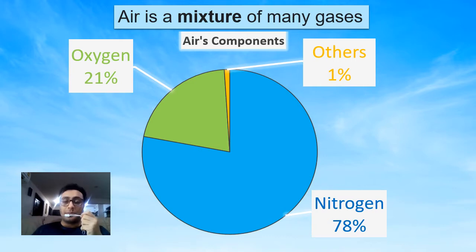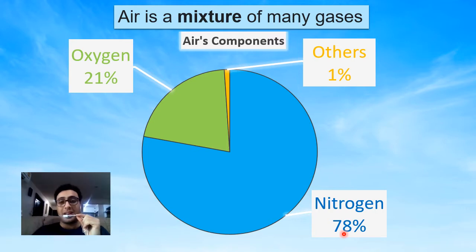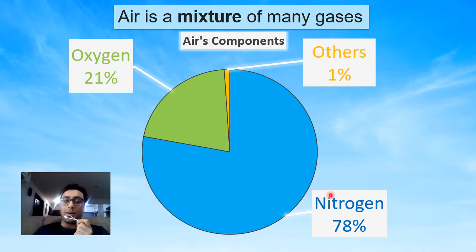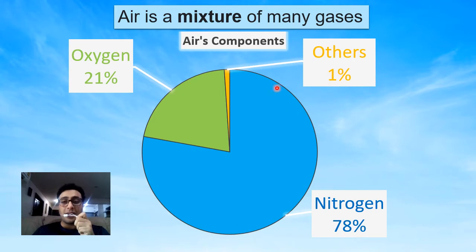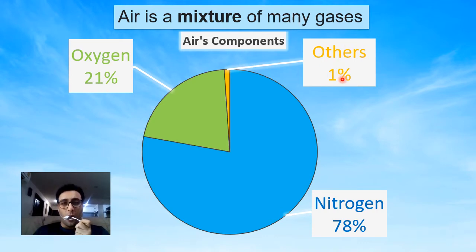Air is made of — let me show you — 78% nitrogen. So most of the air around us is nitrogen, and 21% is oxygen. We have a lot of other gases, but they only cover 1% of the whole air around us. So we have nitrogen 78%, oxygen 21%, and others only 1%. This is what makes air around us.